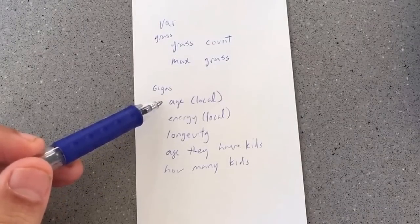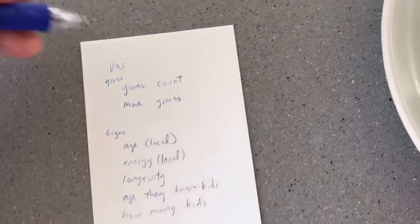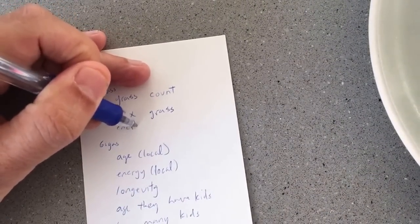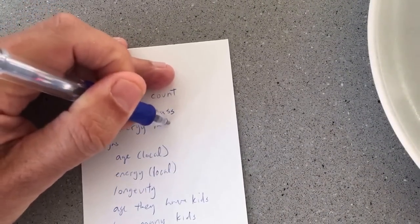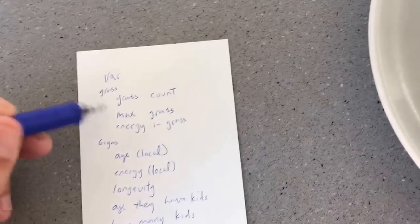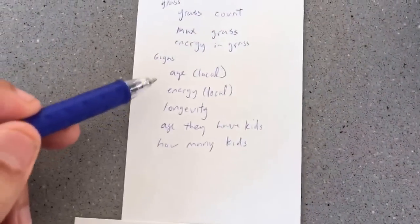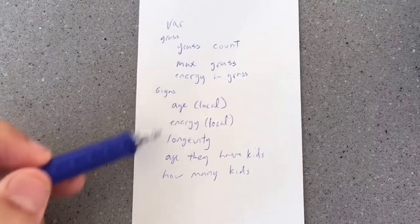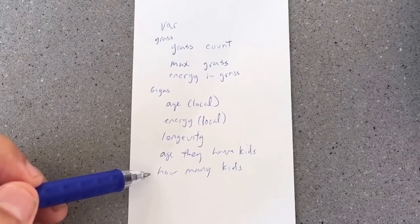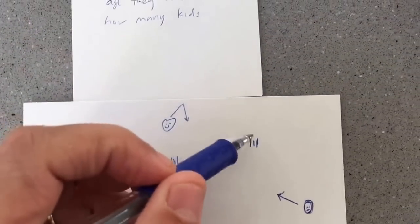What else? Well, when they eat the grass, there has to be energy in the grass. How much energy comes from the grass? And then the gigas are going to gain that energy. Let me think. What else? I think that's pretty much it. So what I want is my little gigas to march around the screen.